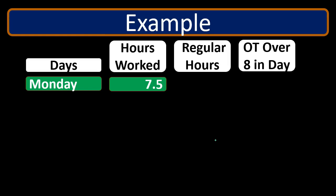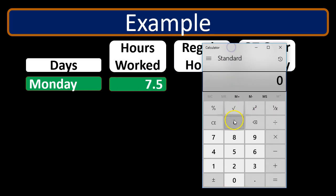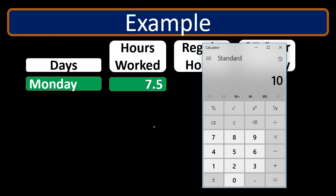Now when considering overtime rates, the normal overtime rate is time and a half. If we're paying someone $10 an hour times time and a half, that's basically a 50% increase — you could think of it as getting a 50% raise. So you calculate $10 times 0.5, which is $5, plus the original $10, giving you $15 at time and a half.